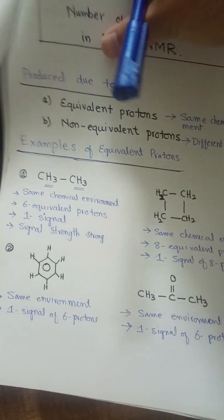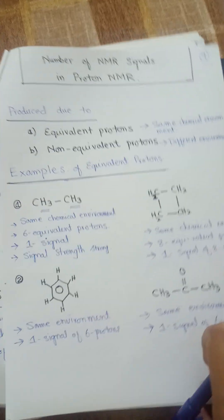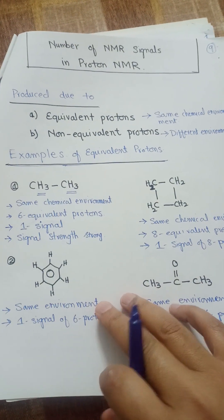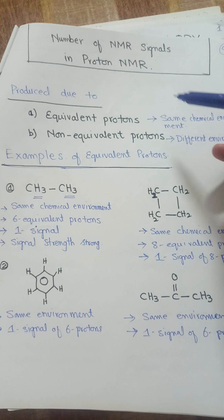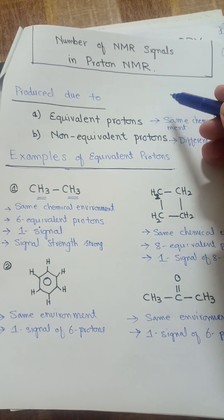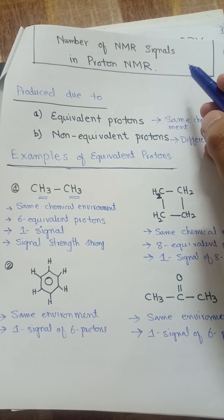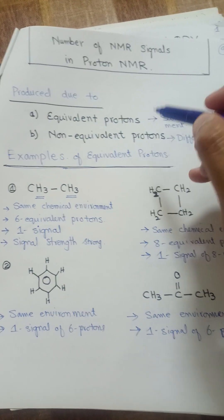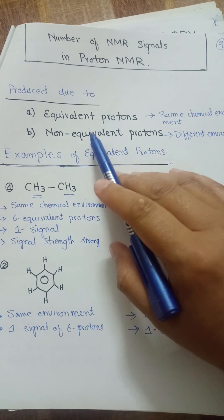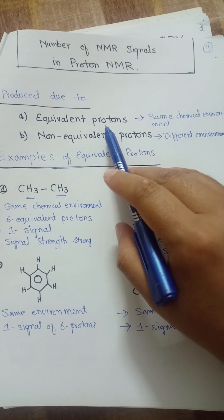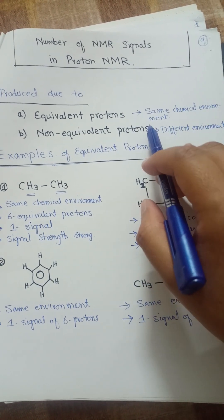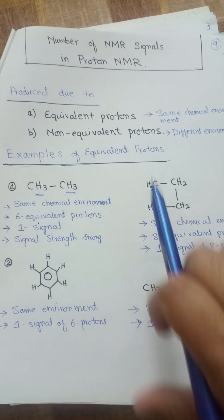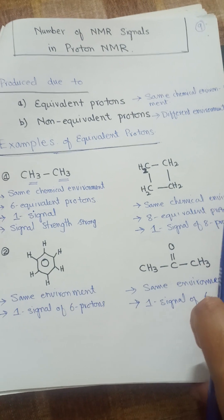We will now discuss the number of NMR signals in proton NMR in detail. The number of NMR signals is produced because of equivalent and non-equivalent protons. Equivalent protons are the protons which are present in the same chemical environment, whereas non-equivalent protons are those protons which are present in different chemical environments.